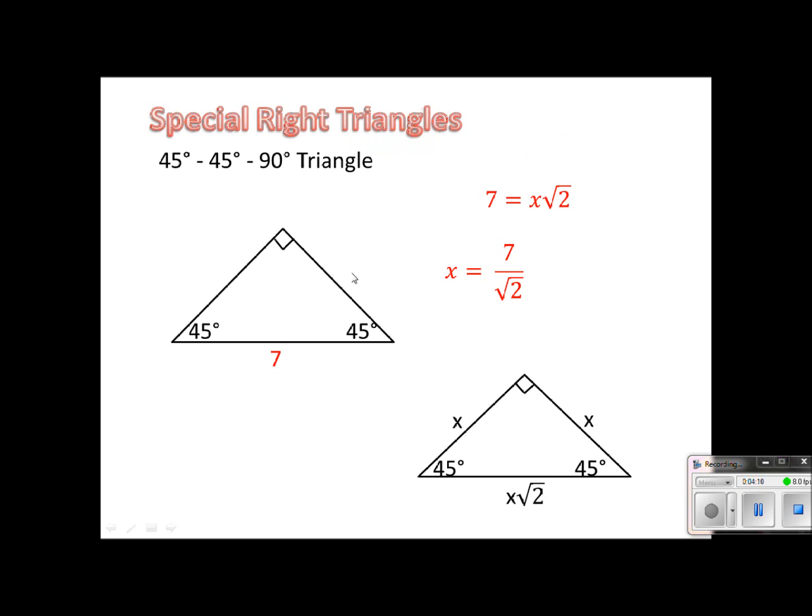The only problem is we have to go one more step because this is not proper. We need to rationalize the denominator. We cannot have a radical in the denominator. So I need to multiply the top and bottom by root 2, and that will give me 7 root 2 over 2, because root 2 times root 2 is root 4, which is just 2. So that gives me the length of one of my legs. And of course, because it's isosceles, the other one would have the same measurement as well.